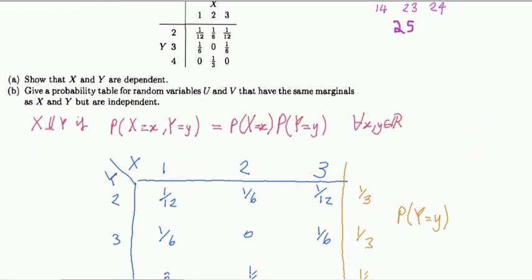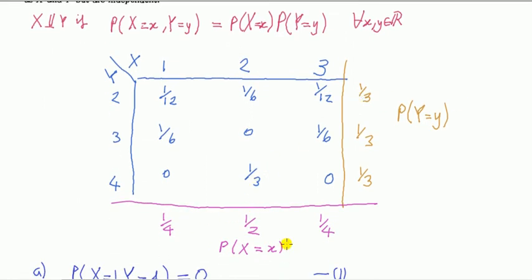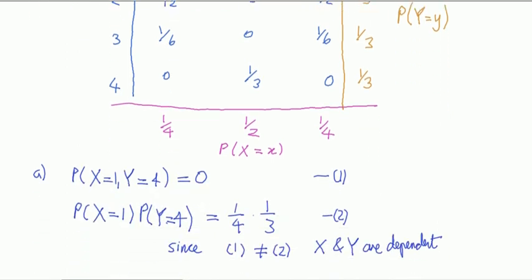First of all, I need the marginal for X and Y. There you go, that's the marginal for X, that's the marginal for Y, done more slowly in another video. And that's part A.